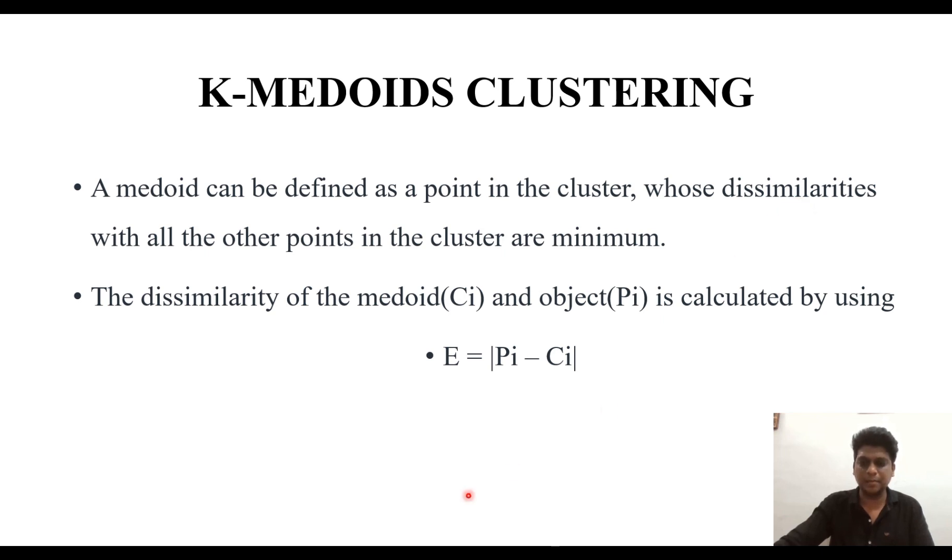So this type of similarity is calculated with the help of E equal to modulation of Pi minus Ci. Here this Pi represents the object point and this Ci represents the Medoid point.